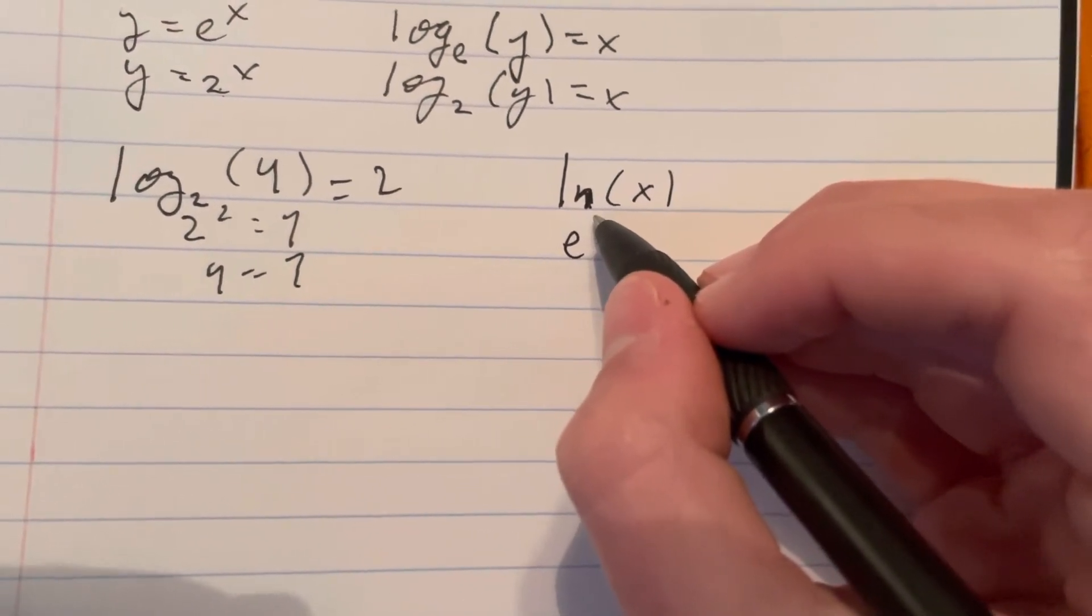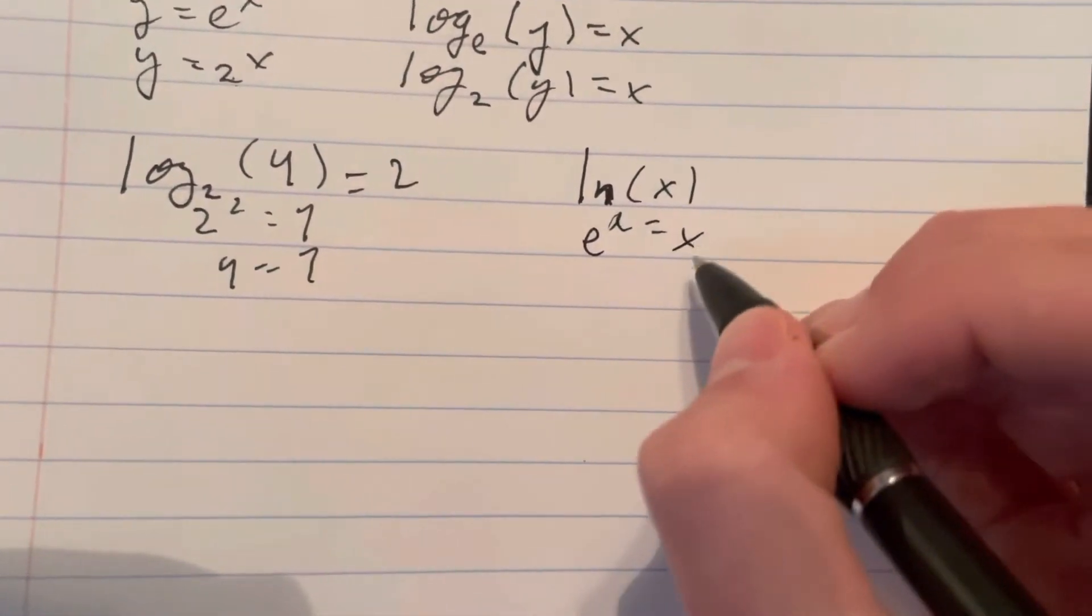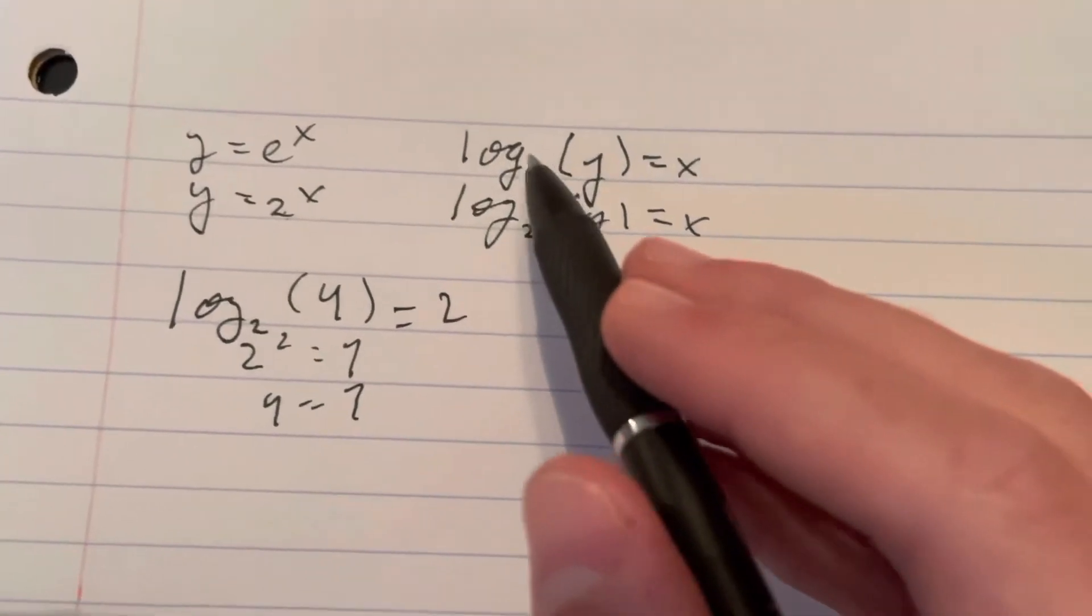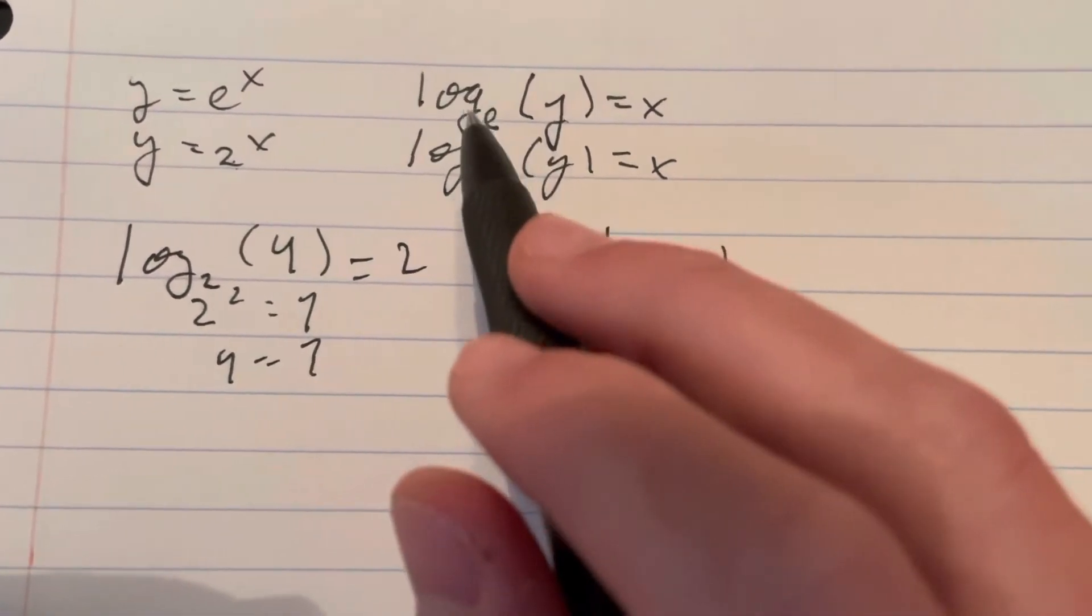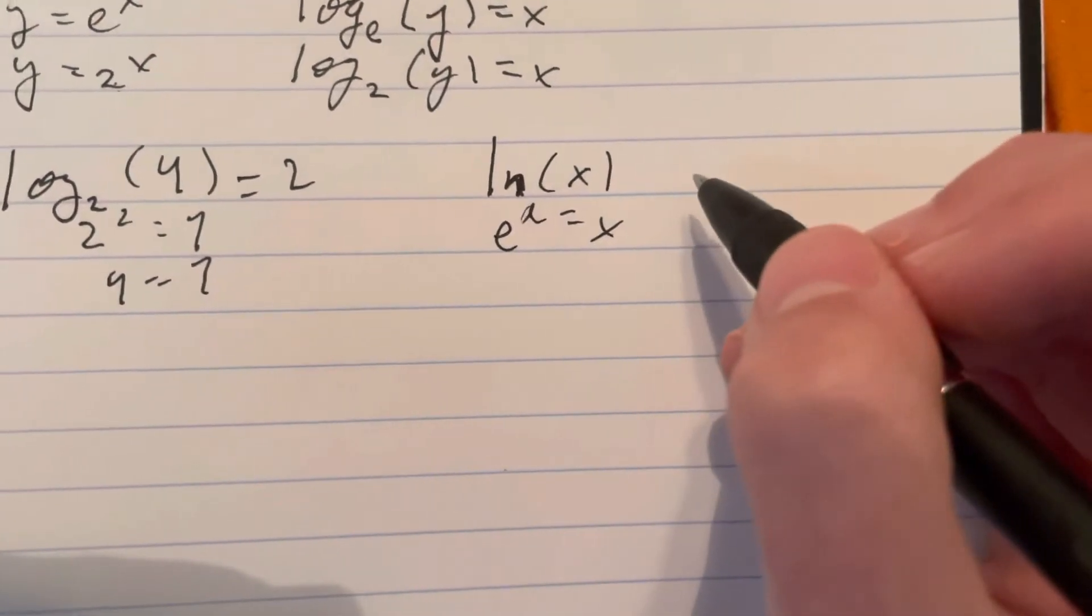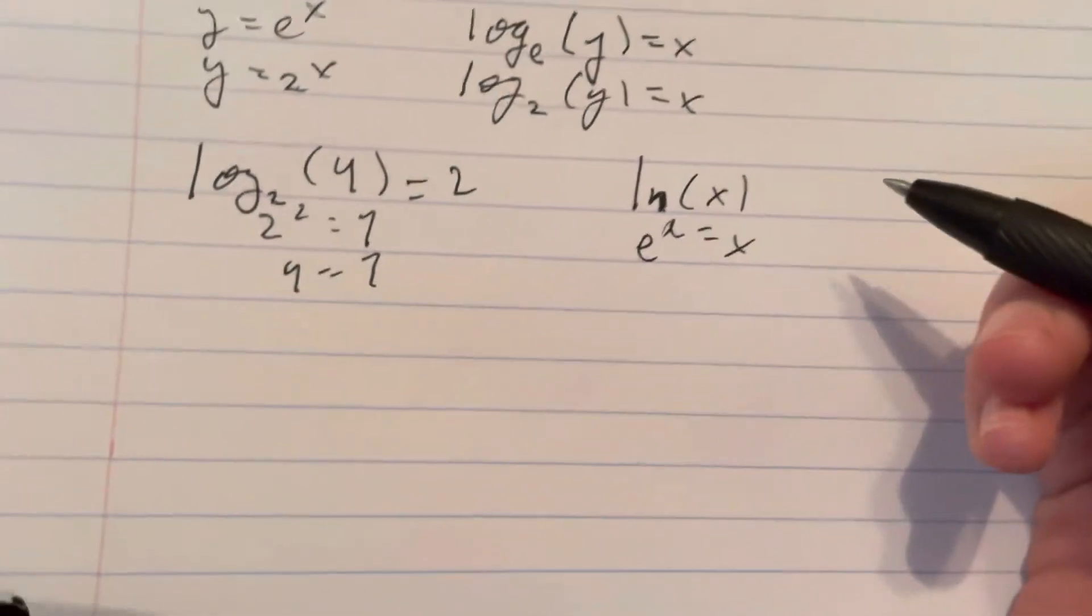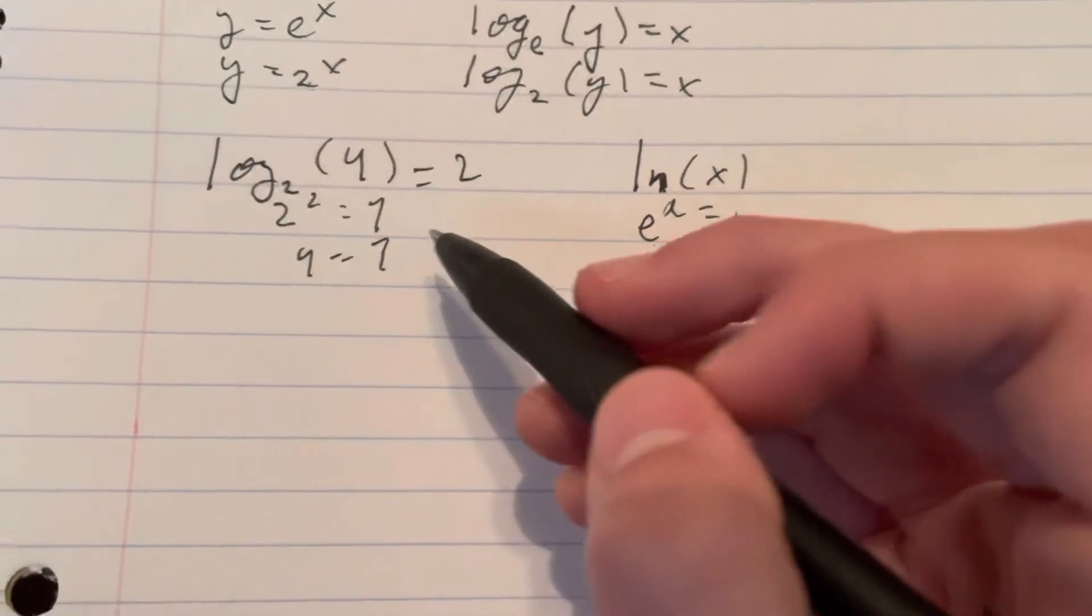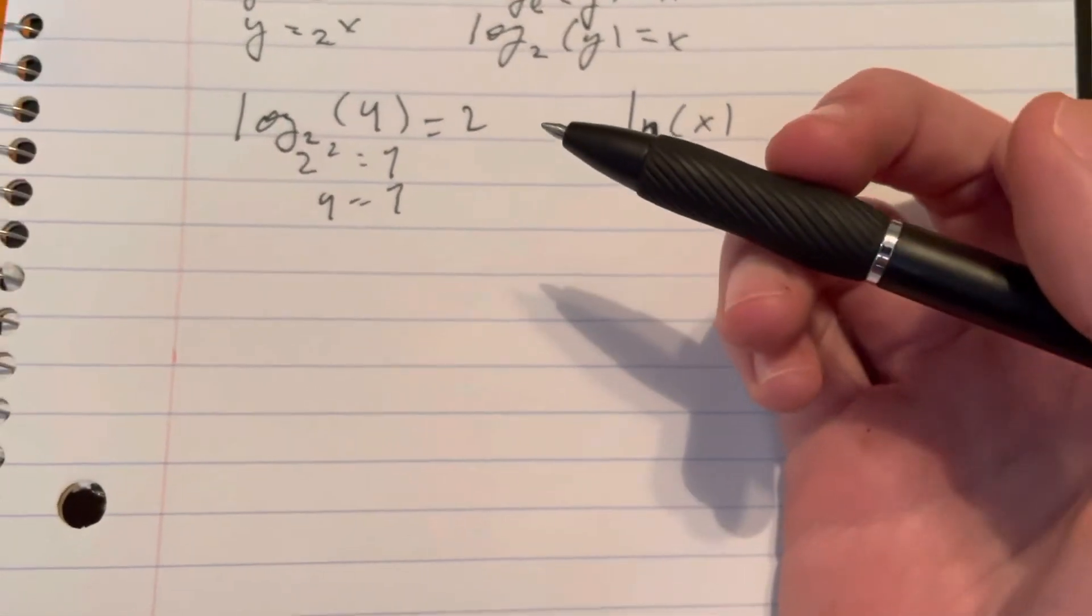That's the same as log base e. ln equals log base e. It's called a natural log; other logs are just called logarithms.